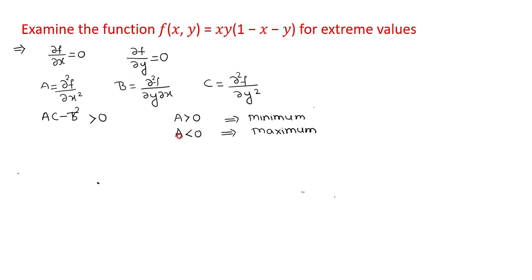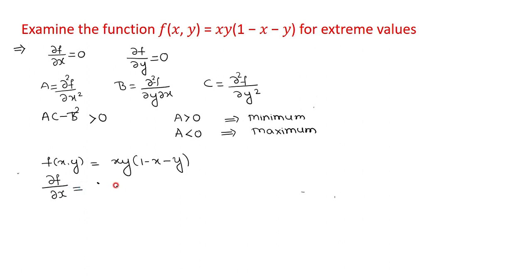For our problem, given f(x,y) = xy(1 - x - y), we find the first-order partial derivative ∂f/∂x. Note that y is constant, and two functions contain x, so we apply the product rule. Keeping x as is, the derivative of (1 - x - y) with respect to x gives -1, and the derivative of 1 is 0 and of y is 0. Then keep (1 - x - y) as is, with derivative of x equal to 1.